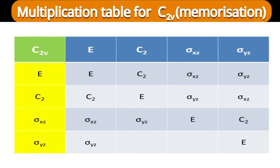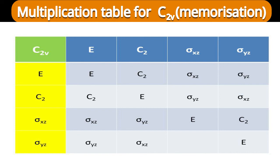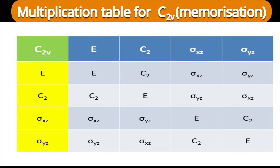Sigma YZ into C2: sigma XZ is not considered, so the result is sigma XZ. Last position: sigma YZ into sigma XZ — the operation not considered is C2, so the result is C2. Now we have completed all positions in the multiplication table.